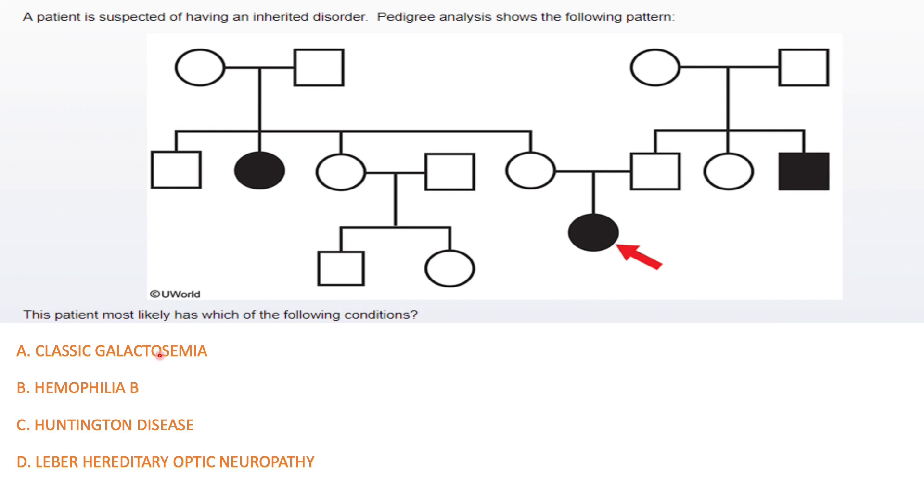But the question here goes one step further to the actual syndromes or genetic disorders. You need to know that genetic disorders with a structural defect are usually autosomal dominant, and those with a functional defect or enzymatic defect are the ones that are autosomal recessive. So I would choose classic galactosemia. Hemophilia B is X-linked, Huntington disease is autosomal dominant because it's a structural defect, and Leber hereditary optic neuropathy is mitochondrial.